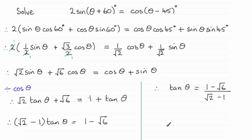From here, I can easily work out what θ is, because if I take the inverse tan of both sides, I end up with θ = tan⁻¹[(1 - √6)/(√2 - 1)].